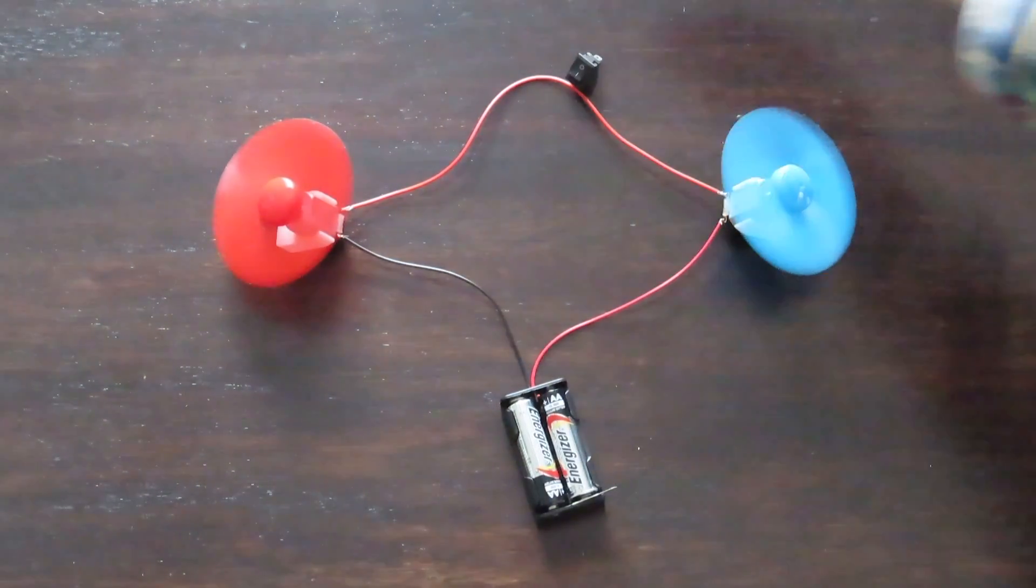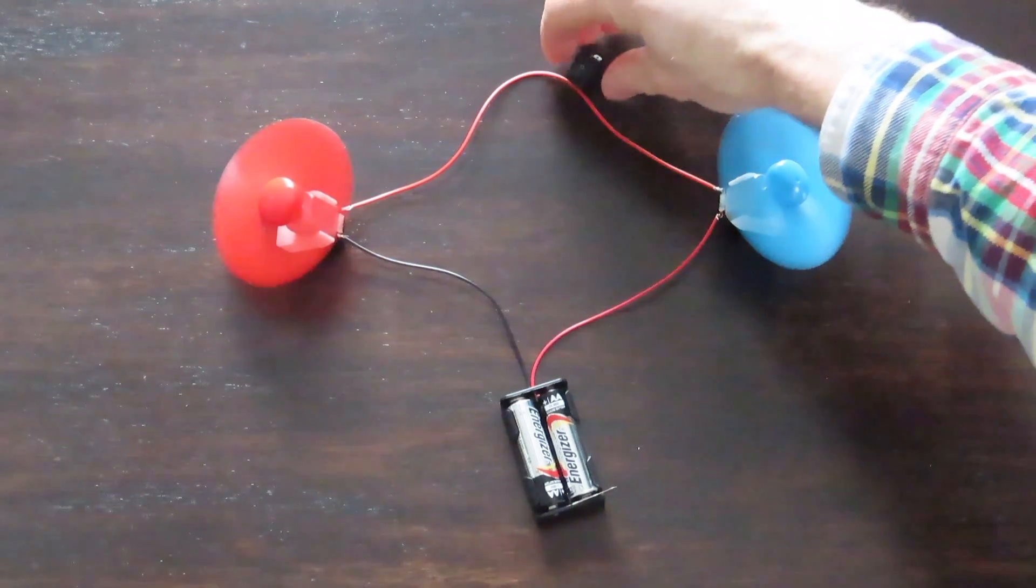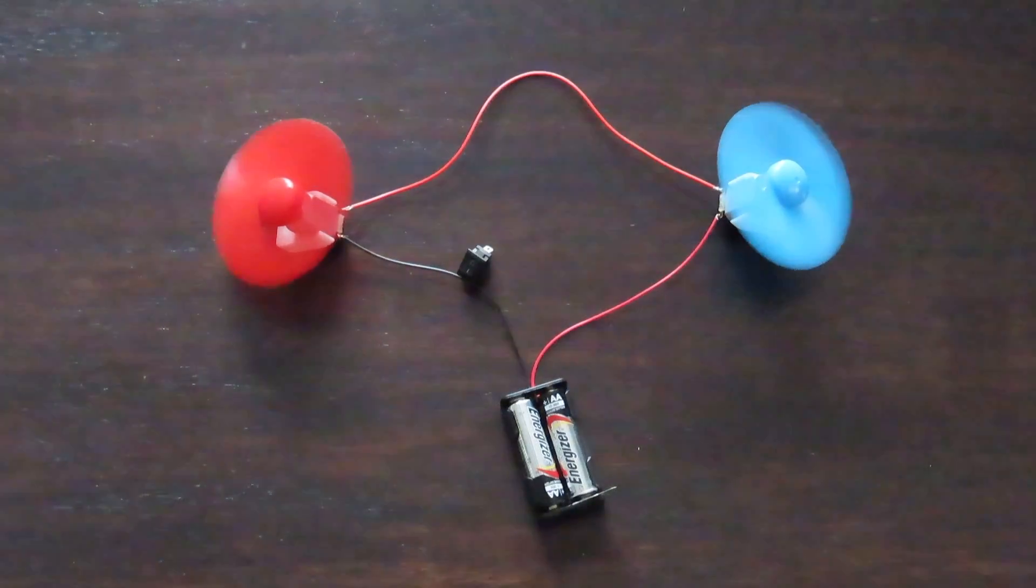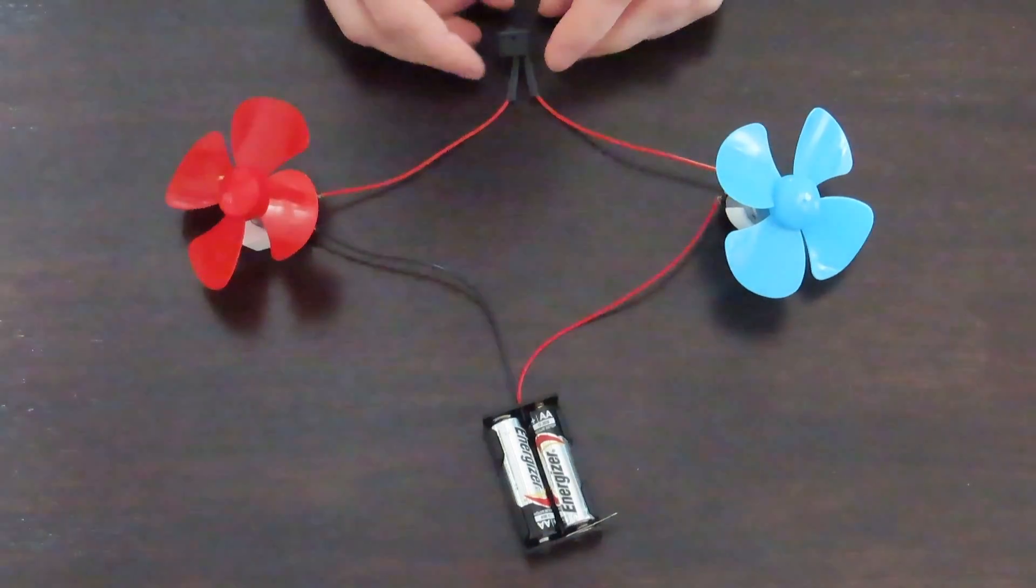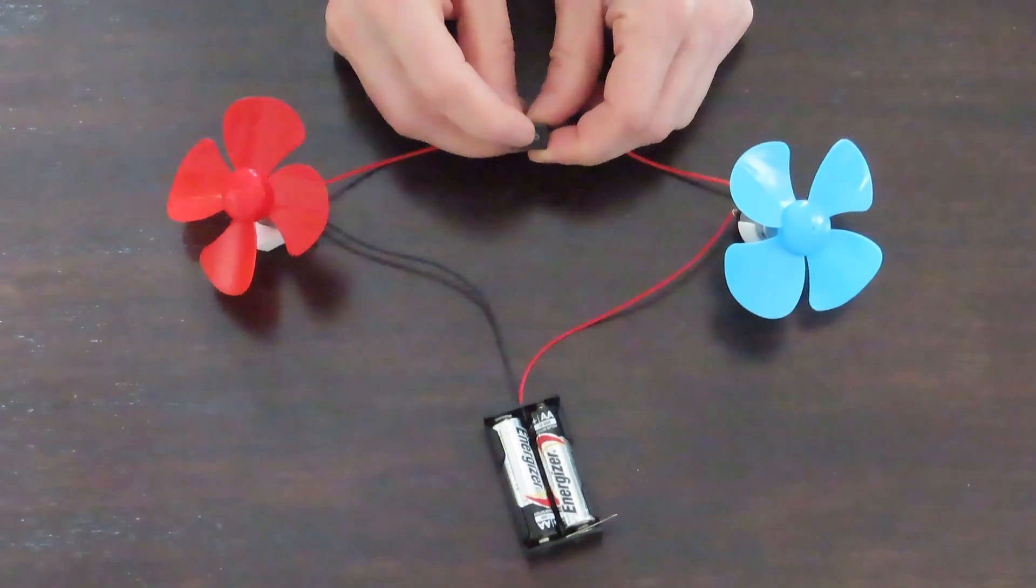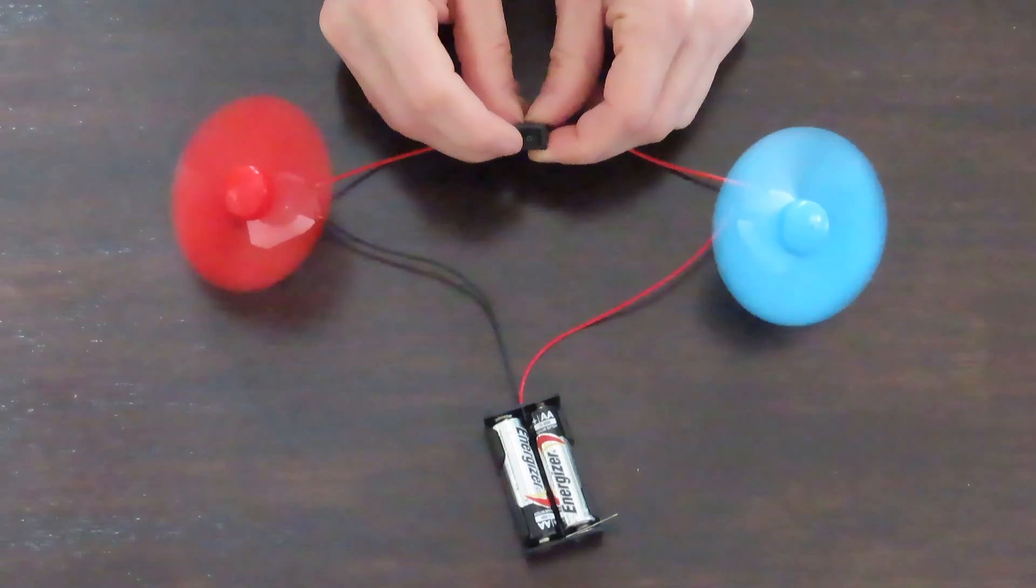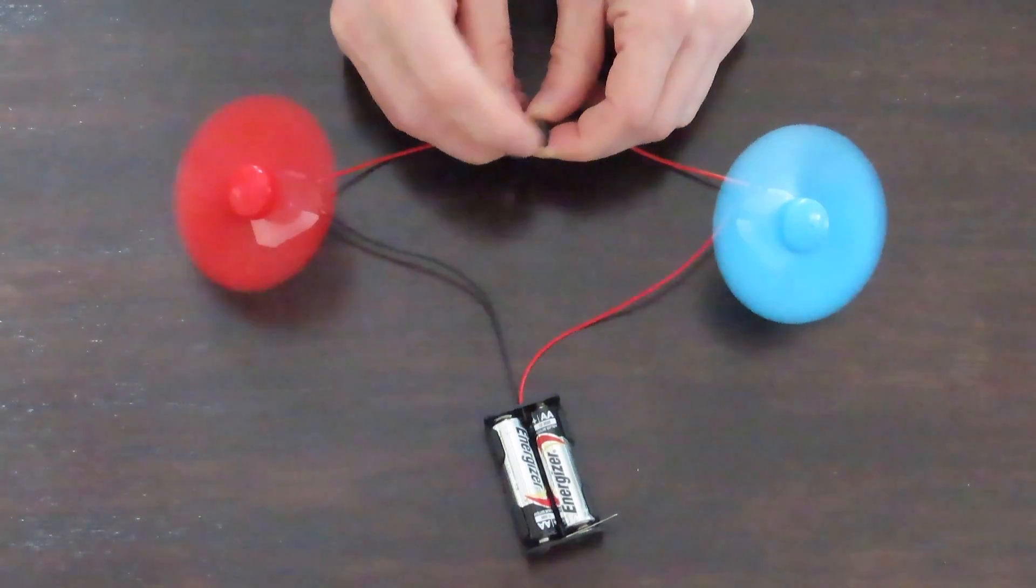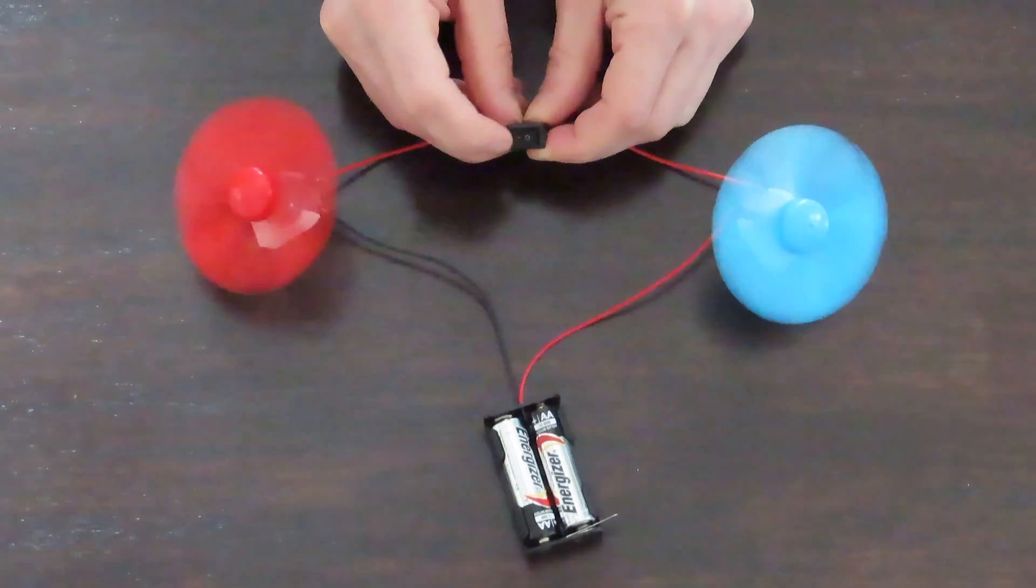Now we could wire a switch up anywhere on the path regardless of position and the switch would complete or break the circuit. For example, I wired a switch into the circuit and it now can turn the motors on and off. This happens anywhere I place the switch in the circuit.